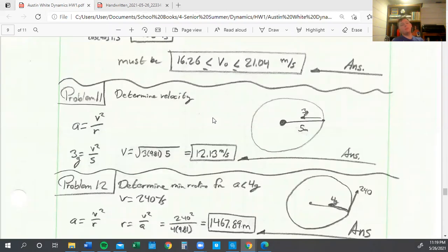Problem eleven is pretty easy. We just use our regular NT coordinate system. We've got A equals V squared over R. Because we were given both our A and our R, we can just plug those two right in, solve for V, and we end up with 12.13.